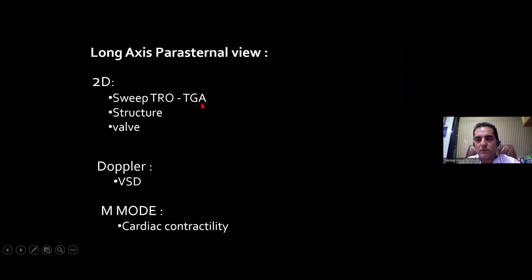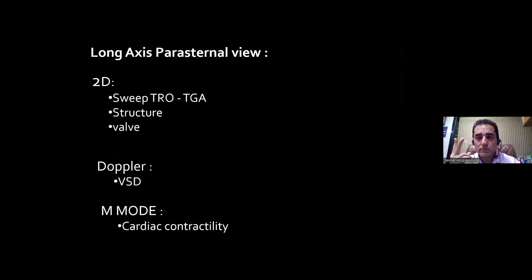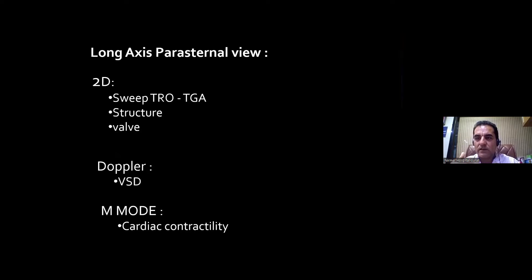Next comes the parasternal views. In parasternal views, as we have already discussed, it is divided into two parts: low parasternal views and high parasternal views. In low parasternal views, we have two subdivisions — parasternal long axis, in which the heart is cut longitudinally, and parasternal short axis, in which the heart is cut cross-sectionally.